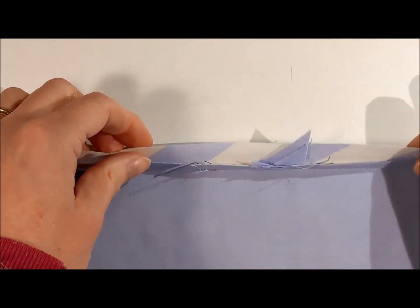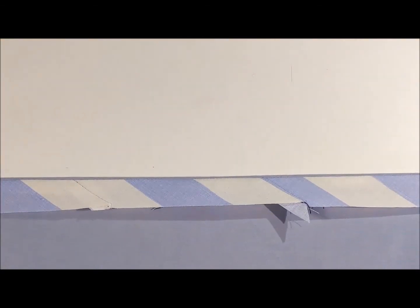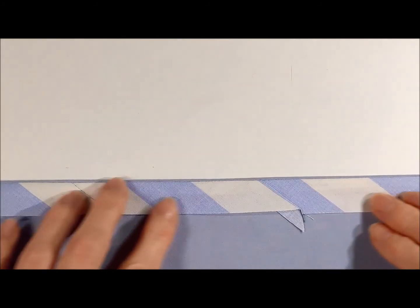So that would be the right side if you didn't want to see it. And there's the wrong side or pressed down. So that's how you join a piece of bias binding to another piece.